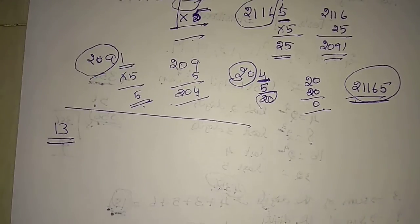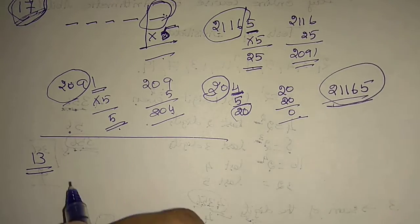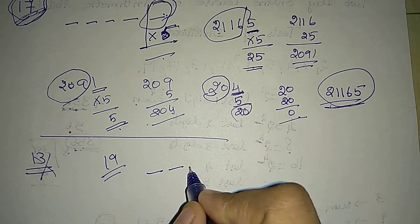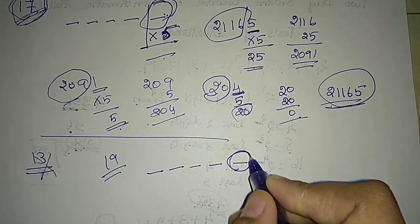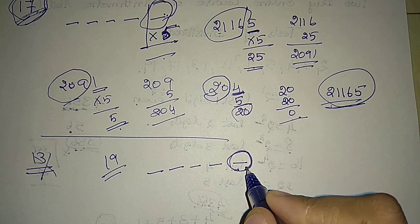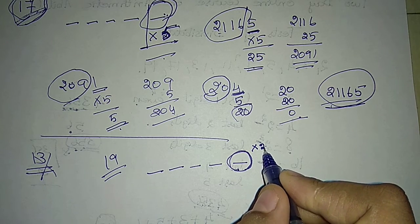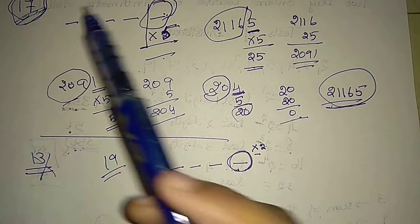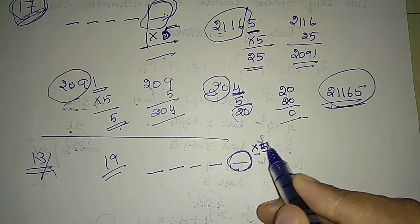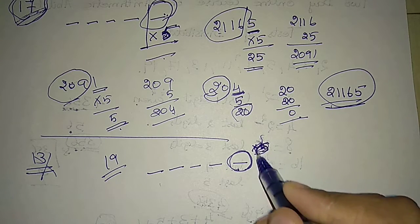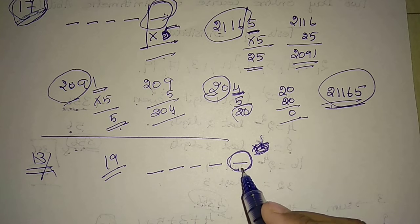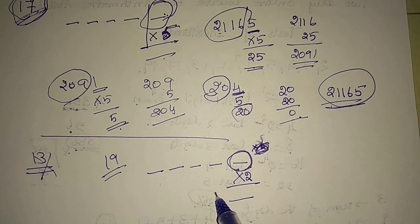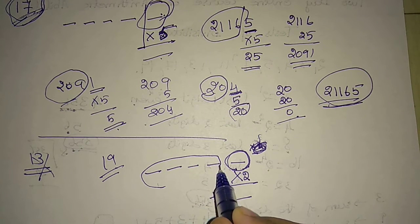Next, before going to 30, I am going to explain for 19. For 19, also the same procedure: consider the last digit. In 7, we multiply this number by 2 and subtract from the remaining digits. As in the case of 17, we multiply by 5 and subtract. But now for 19, take the last digit, multiply by 2, and add the answer with the remaining digits.